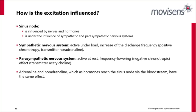The sinus node is influenced by nerves and hormones — both the sympathetic and parasympathetic nervous systems. The sympathetic nervous system is always active under load; it increases discharge frequency and is primarily driven by the transmitter noradrenaline. The parasympathetic nervous system is more active at rest, is frequency-lowering, and works off acetylcholine as its neurotransmitter. Adrenaline and noradrenaline, reaching the sinus node via the bloodstream as hormones, have basically the same effect on the heart.